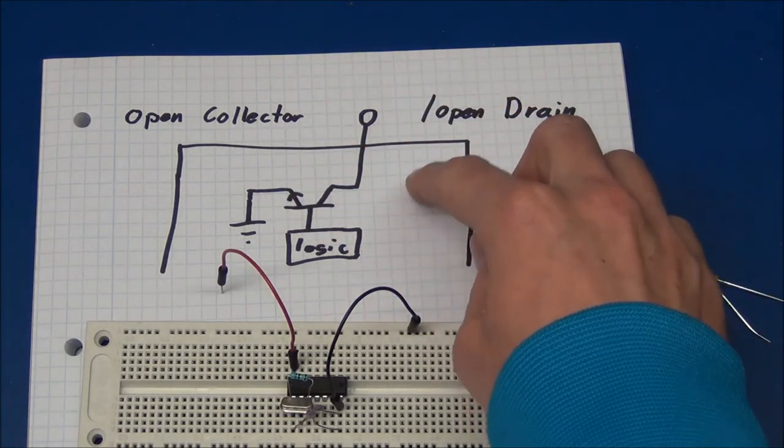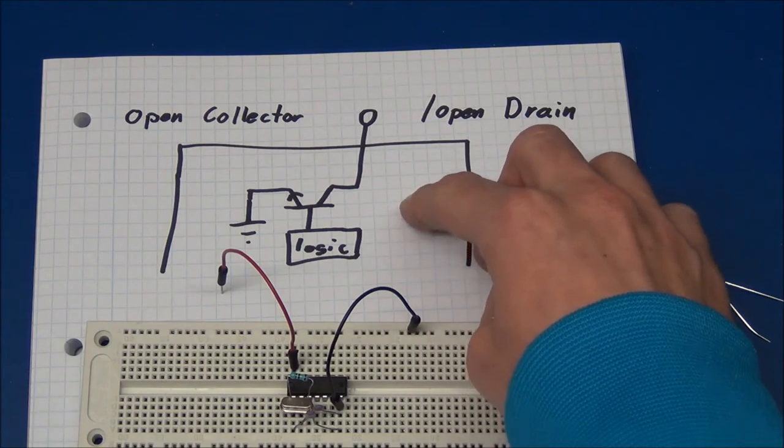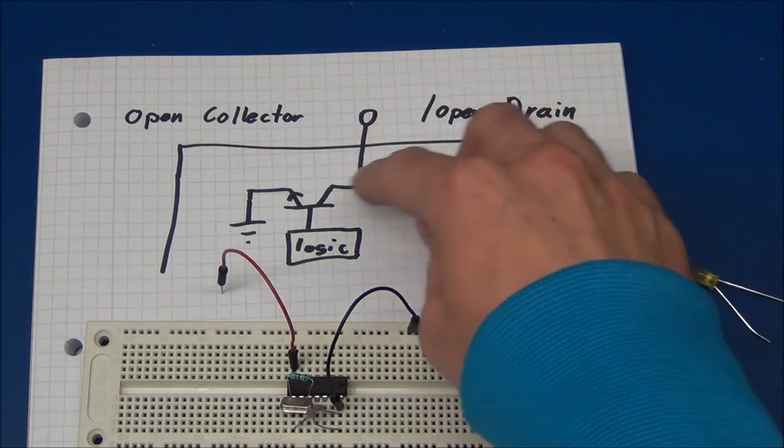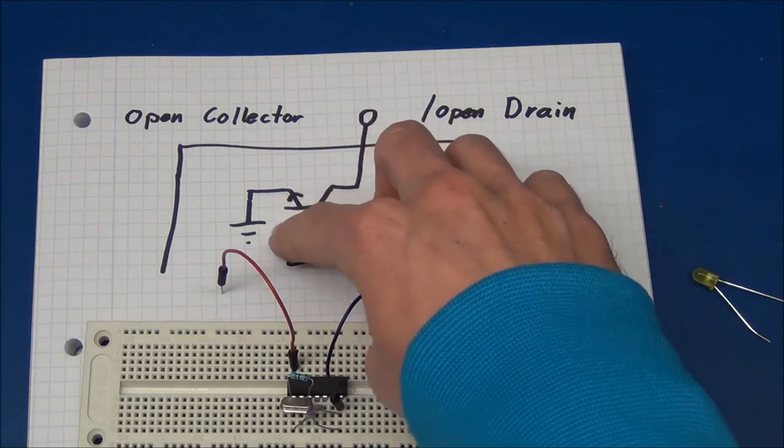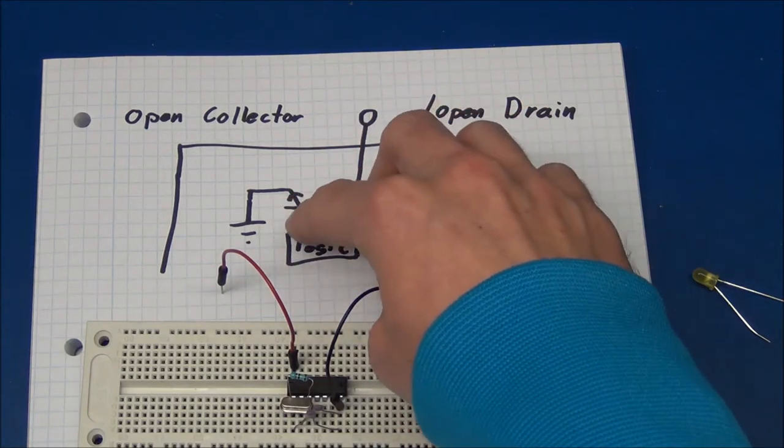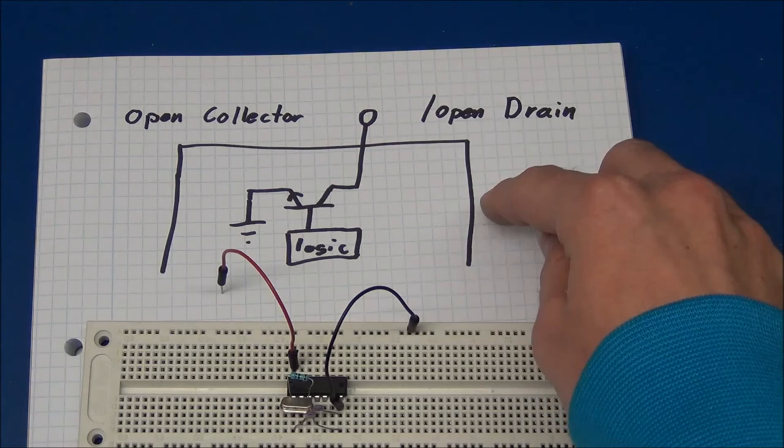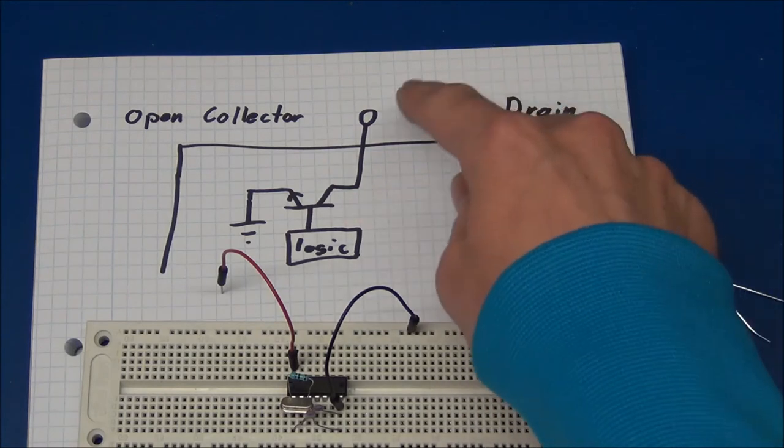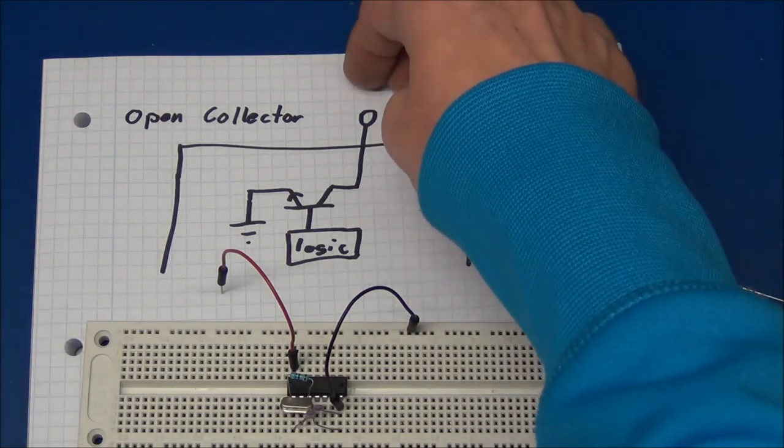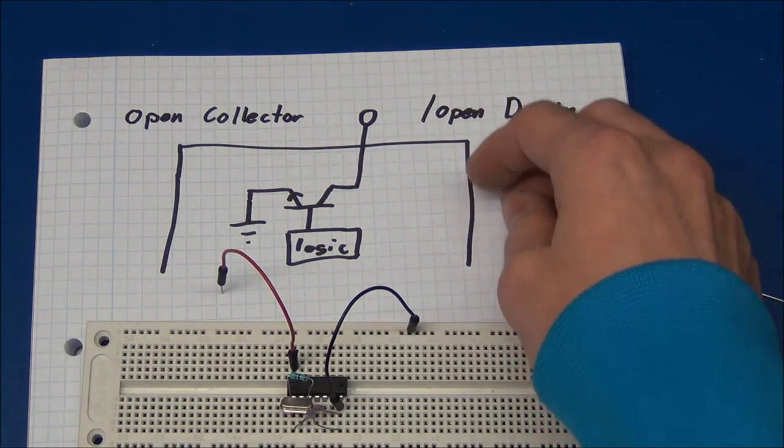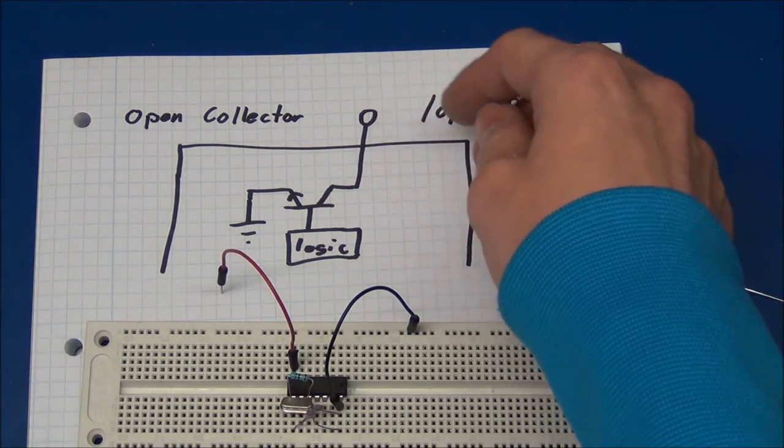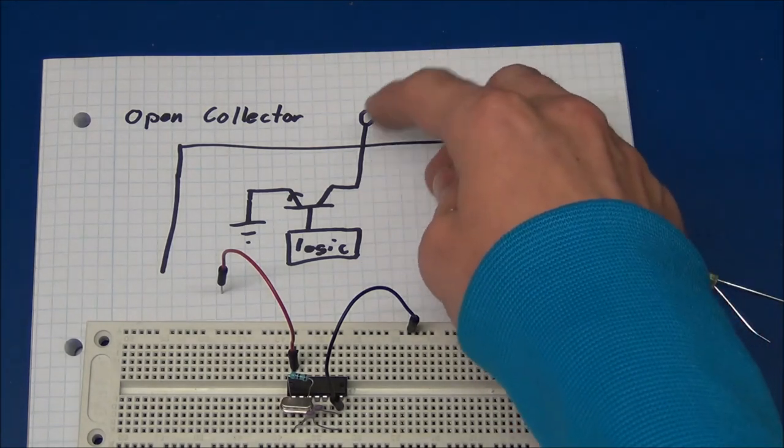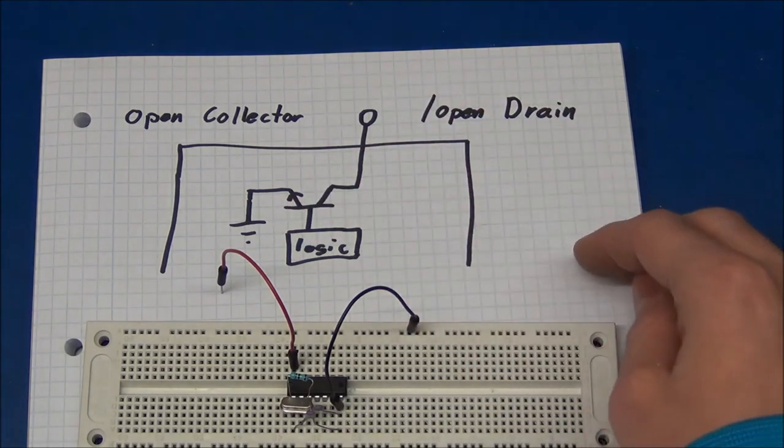But with the open collector or open drain output configuration, that can never happen because you have only one rail in here, so if this one is high and the other is low, then the maximum current that can be drawn from this is what you connect outside of here. And if that's a pull-up resistor, then the value of the resistor will determine how much current this will dissipate.